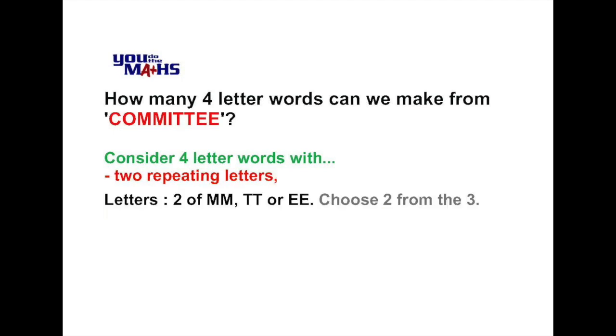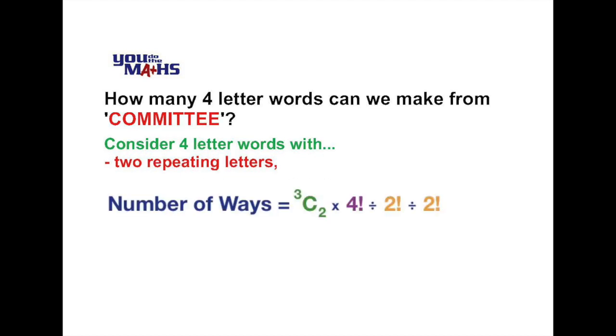Finally we have to consider what if there's two pairs of repeating letters, for example M M T T or M M E E. In this case we're choosing two pairs from a possible three. So the way that we do the calculation is we say it's 3C2, that's choosing the two pairs of letters from the three possible ones, multiplied by 4 factorial for all the different arrangements of the letters, but then dividing by 2 factorial because we have a pair of letters which are the same, and then doing the process again of dividing by 2 factorial because there's two pairs of letters the same. That calculation leaves us with 3 multiplied by 24 divided by 2 divided by 2, which is equal to 18.